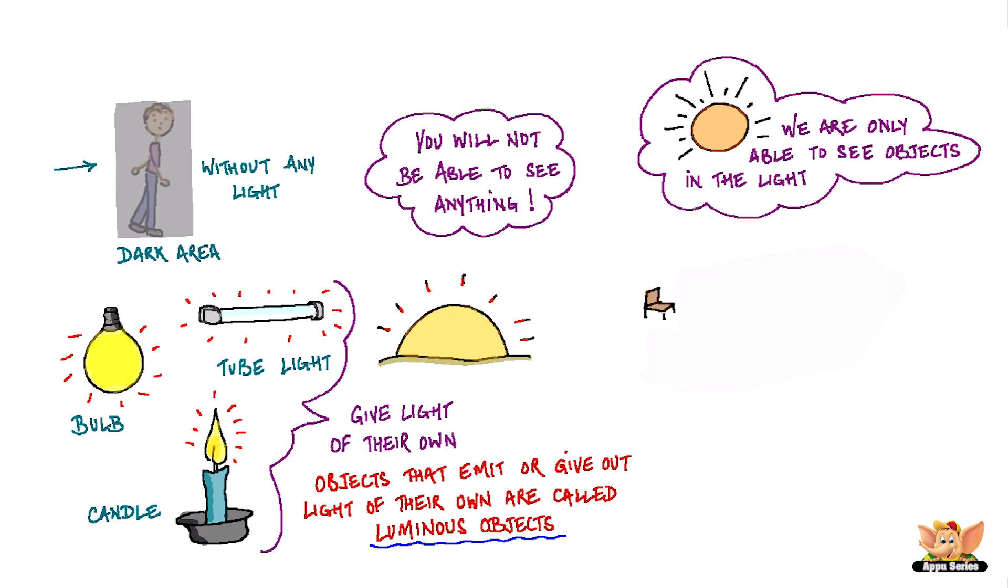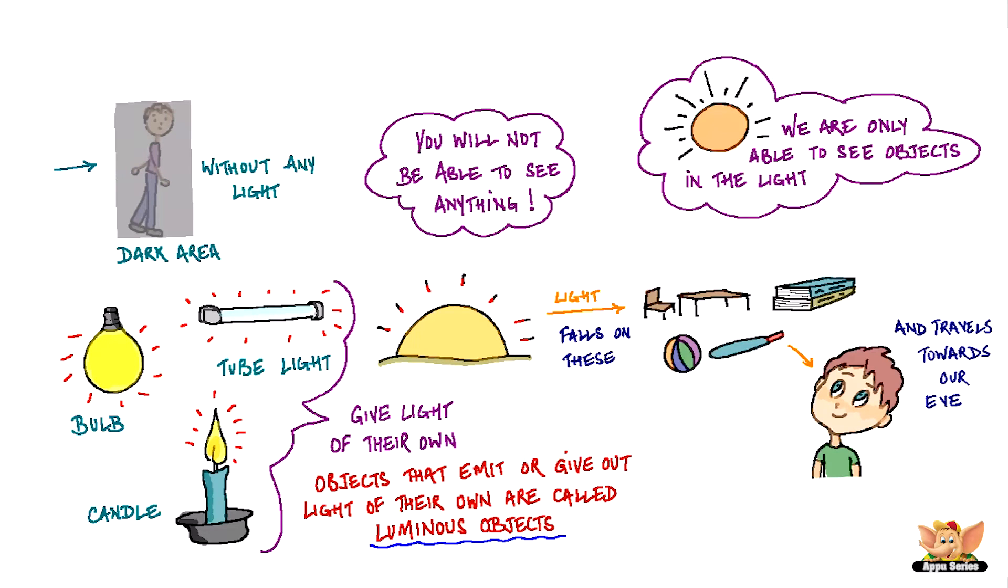Objects like chairs, tables, books and toys are seen when light from a luminous object like the sun, a torch or an electric light falls on these and then travels towards our eye.